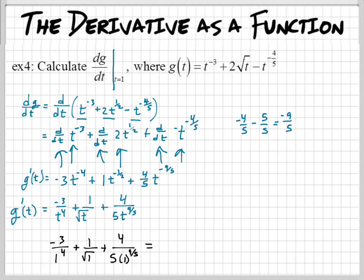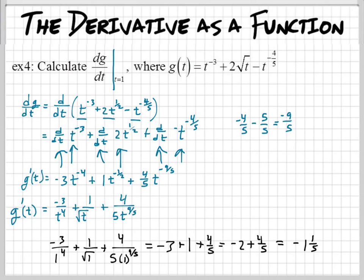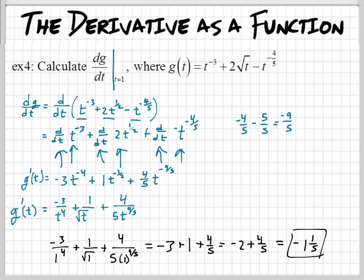Let's simplify. The first term becomes negative 3, the next one becomes 1, and for the last term — the 9/5 doesn't even matter because 1 to the ninth power is just 1, and the fifth root of 1 is just 1 — so we get plus 4/5. That gives us negative 3 plus 1 plus 4/5, which is negative 2 plus 4/5, which equals negative 1 and 1/5. That is the slope of this function at t equals 1.